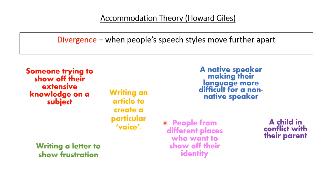The next example is people from different places who want to assert their identity. In the world of sport, two football fans who are very proud of their teams — one from the north and one from the south — may purposely use dialect from their areas to keep their language apart from their rivals. A native speaker may also make their language more difficult for a non-native speaker if they want to exclude them or make them feel inferior. Finally, a child in conflict with their parent might diverge by giving one-word answers or using words and phrases they know their parent will struggle to understand.